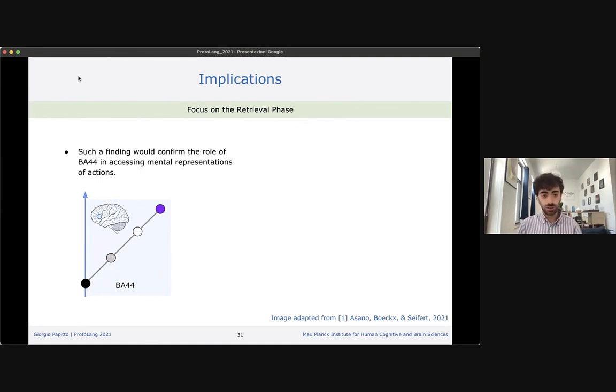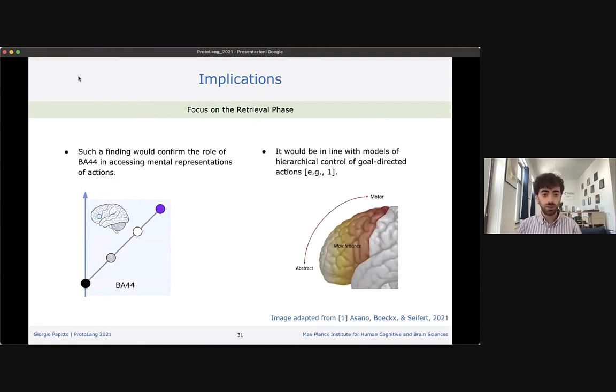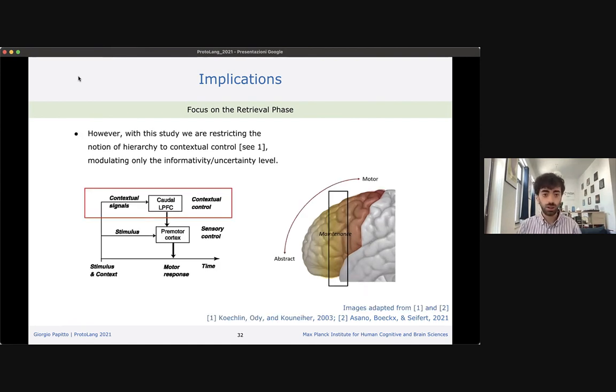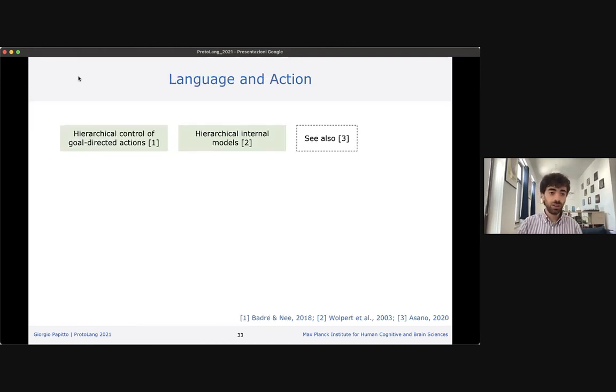If we focus on the expectations concerning the retrieval phase and the involvement of BA44, a finding conforming to our expectation would confirm the role of the area in accessing mental representations of actions and would be in line with models of hierarchical control of goal-directed actions. It was already postulated the role of the caudal left prefrontal cortex and especially BA44 in contextual control. Our study would further specify the notion of contextual control by including different levels of informativity within the same task set.